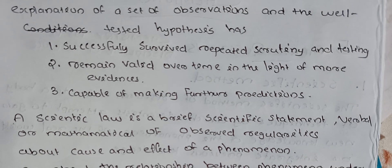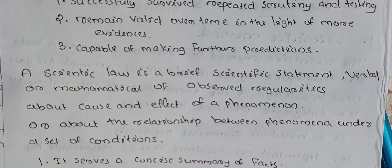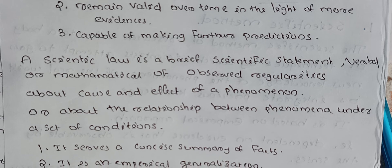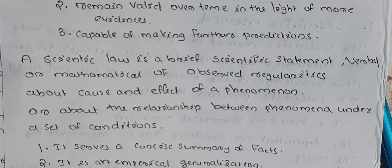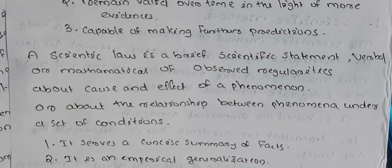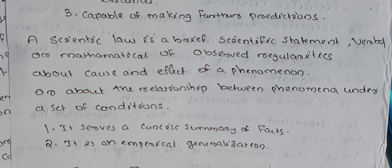In this case, a scientific law is a brief scientific statement, verbal or mathematical, of observed regularities about the cause and effect of the phenomenon, or about the relationship between phenomena under a set of conditions. So it serves as a consensus summary of facts.